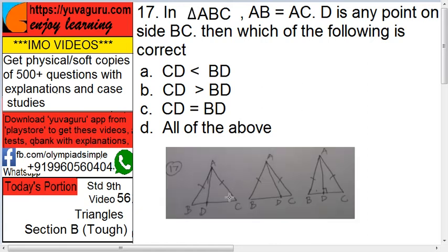Say this important point: AB equals to AC, that's okay. And D is any point. Any point means you don't know where D is. It can be here, here, here, anywhere.